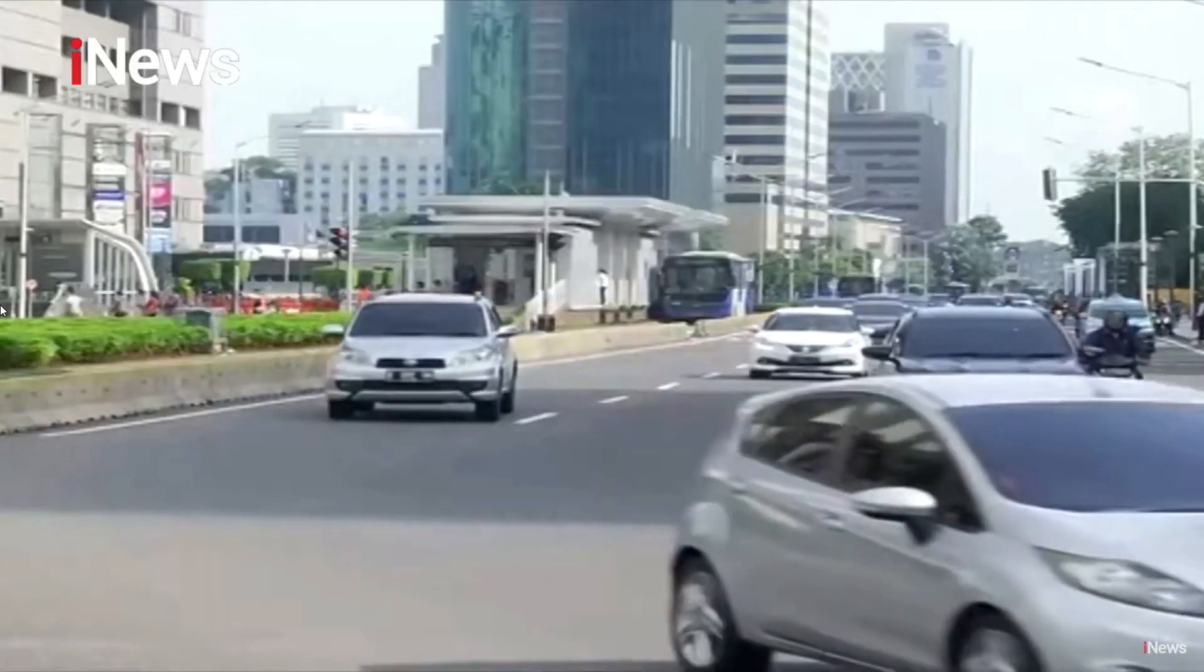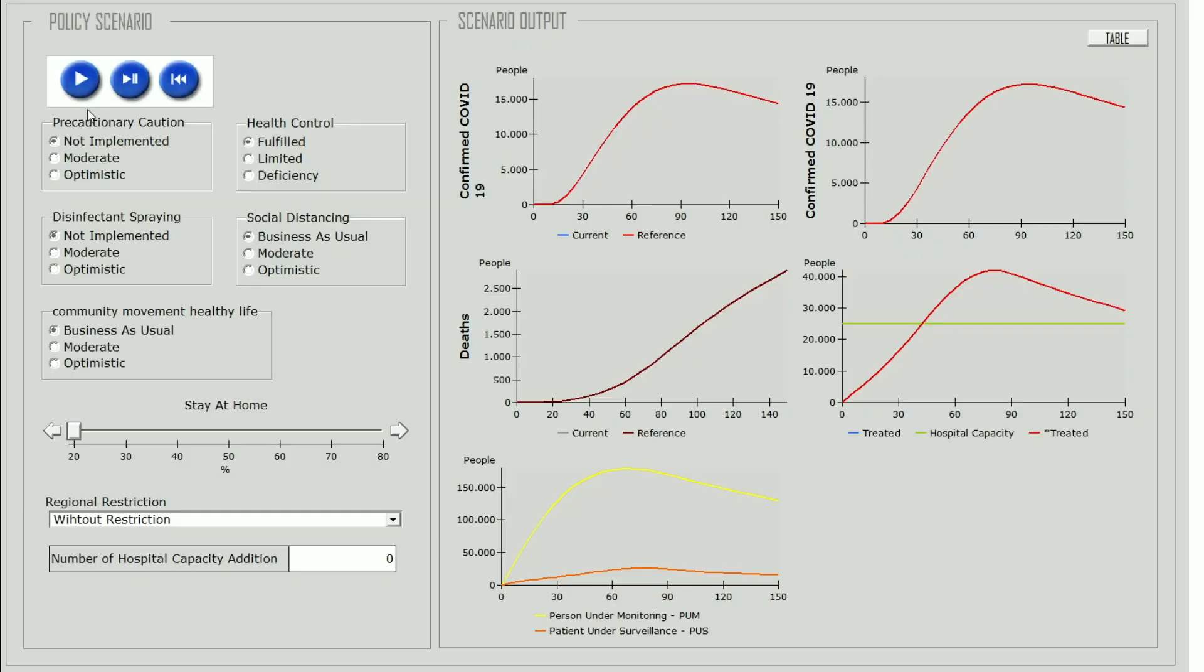Second, progressive scenario. In this scenario, business condition as usual has been conducted until the 30th day, and then start from the 40th day, business condition as usual is increased into progressive.